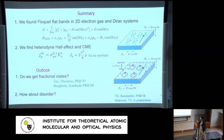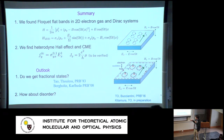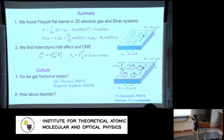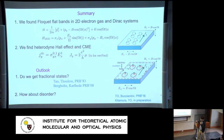Summary: we found flat bands in a two-dimensional electron gas — requiring a magic cyclotron-to-drive-frequency ratio — and in two-dimensional Dirac systems where flat bands exist for any field strength and frequency. We also found a heterodyne Hall effect current: adding only oscillating fields — an oscillating magnetic field and oscillating electric field — we get a DC current perpendicular to the electric field. We also observe a chiral magnetic effect-type current in the y direction. Future outlook: it might be interesting to study fractional quantum Hall states based on these flat bands, as our future program.